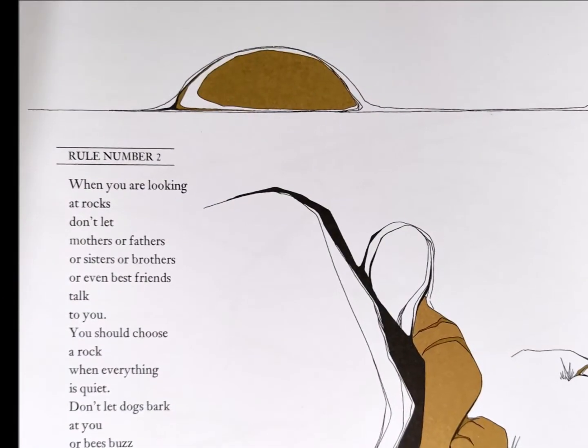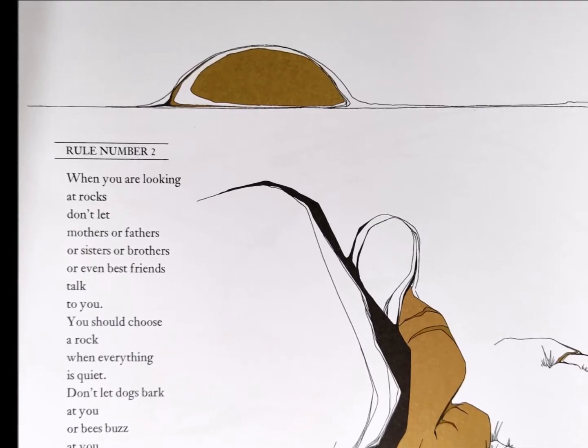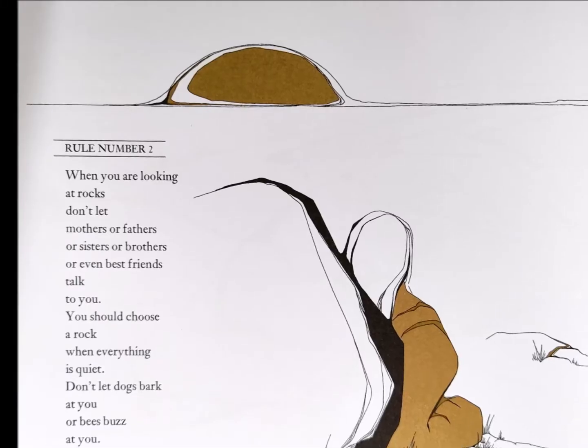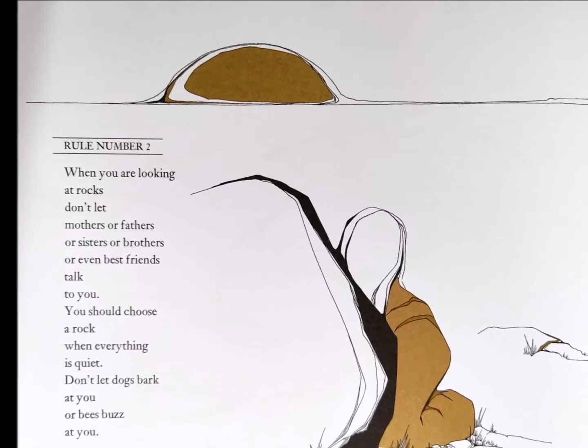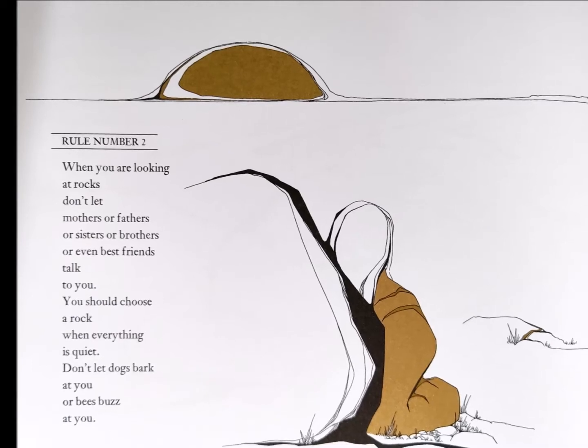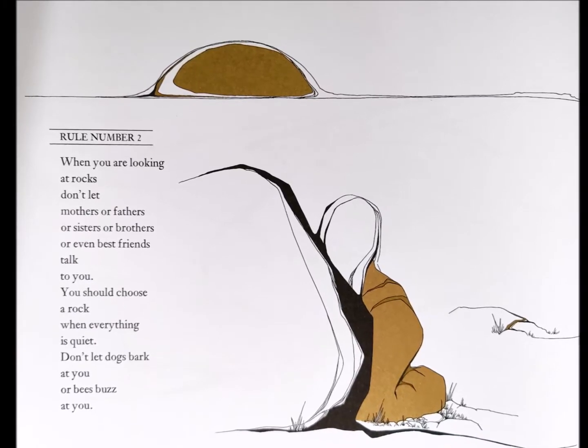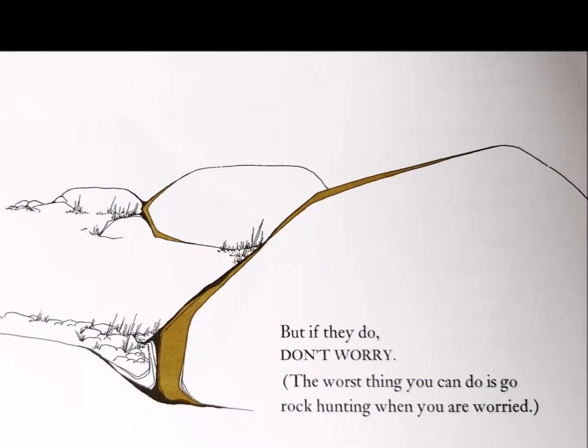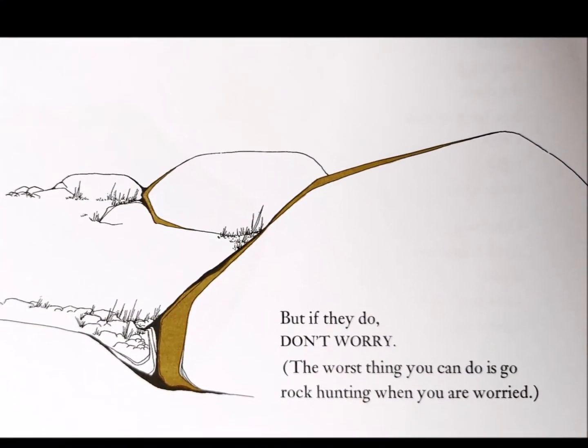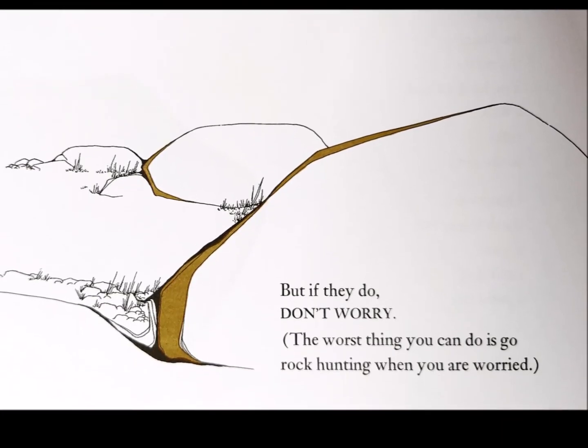Rule number two. When you are looking at rocks, don't let mothers or fathers or sisters or brothers or even best friends talk to you. You should choose a rock when everything is quiet. Don't let dogs bark at you or bees buzz at you. But if they do, don't worry. The worst thing you can do is go rock hunting when you are worried.